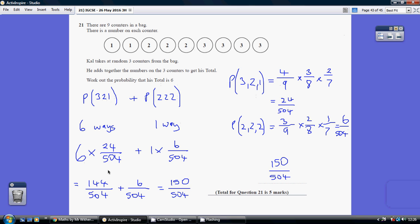So 6 lots of this is this. 1 lot of this is this. Add those together, I get 150 over 504. Obviously simplified versions would have been fine.